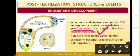Cellular endosperm is found in the gamopetalous group. In this type, during development, each division of the primary endosperm nucleus is followed by cytokinesis. Division of the nucleus is followed by wall formation, and therefore the endosperm remains in cellular mode from the beginning.